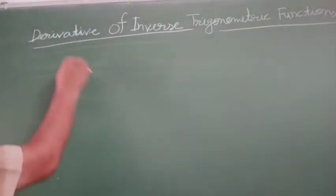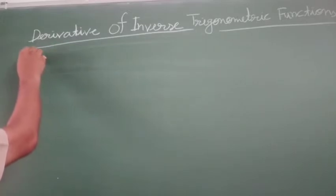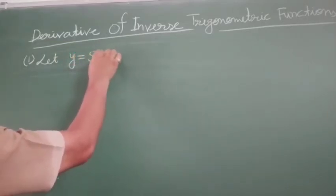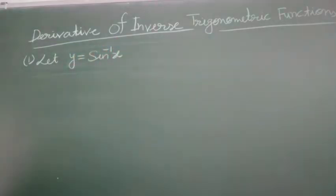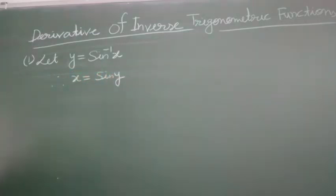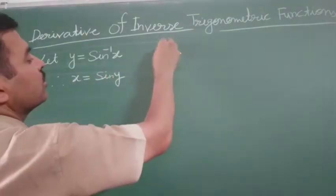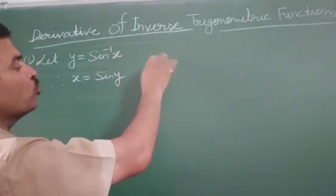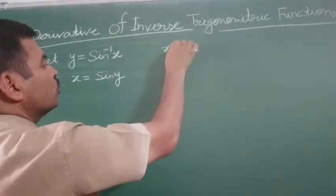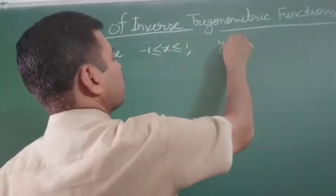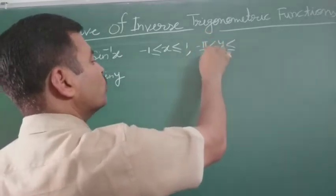We are going to take first sin inverse x. Let y equals to sin inverse x, therefore x equals to sin y. We know that the domain of the sin inverse function is minus 1 to 1, meaning x must belong to minus 1 to 1, and y must belong to minus pi by 2 to pi by 2.